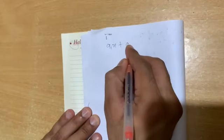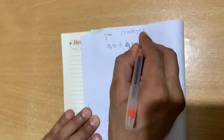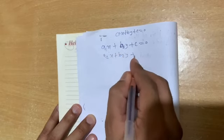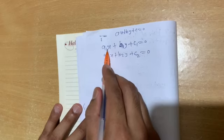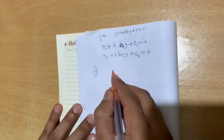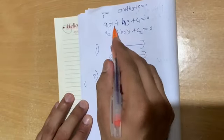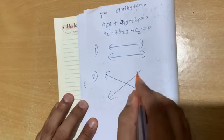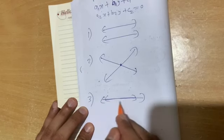If there are two equations — a1x plus b1y plus c1 equal to zero, and a2x plus b2y plus c2 equal to zero — each gives a straight line. The three possibilities are: the lines never intersect (parallel), the lines intersect at exactly one point, or the lines coincide, meaning they are on top of each other.